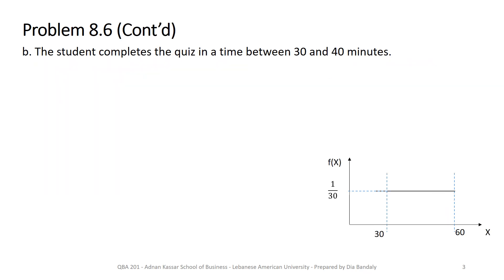All what you have to do is to know how does the PDF look like and in the case of uniform distribution it's always a horizontal line equal to 1 over the upper limit minus the lower limit. So let's answer two more questions. Okay question b part b. We need to find the probability that the student completes the quiz in a time between 30 and 40 minutes. Okay so here I kept the PDF curve that we plotted in the previous slide. And the question here is find the probability of x between 30 and 40.